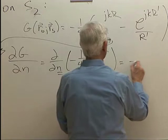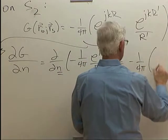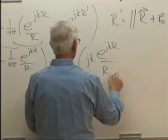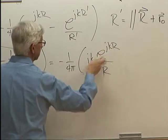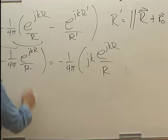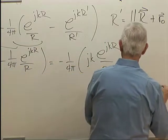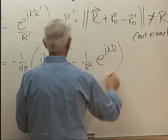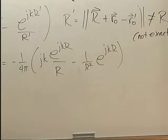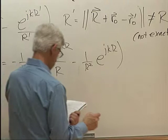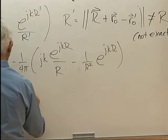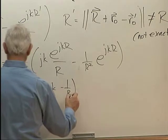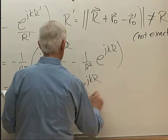So what we have is minus 1 over 4 pi just jk, e to the jkR over R. That's the derivative using the product rule of the first part here, the e to the jkR. And now I do the 1 over R partial derivative. And I get minus 1 over R squared e to the jkR.